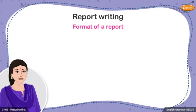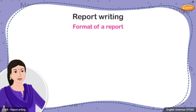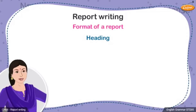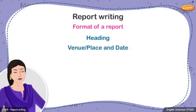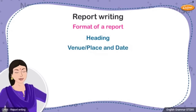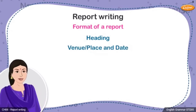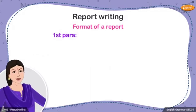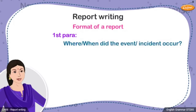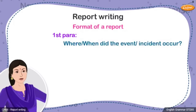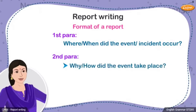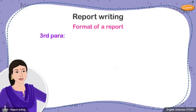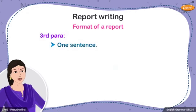Let's discuss the format of the report. We first start off with a catchy heading. Next, you need to mention the venue or place and date on which the report is being written. Then you start off with the main report — the body of the report with relevant paragraph breaks. The first paragraph should describe where or when the event or incident occurred. The second paragraph must describe how the event took place, and you can also write about the sequence of the happenings. The last paragraph should contain two to three sentences about how the event concluded.